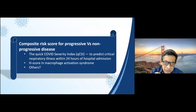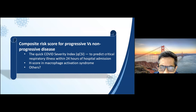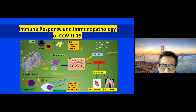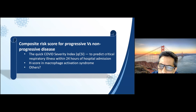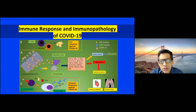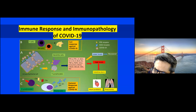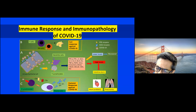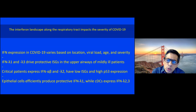It is important to predict who will deteriorate within 24 hours of hospital admission. There is an HScore for macrophage activation syndrome and the qCSI — quick COVID severity index. The immune response and immunopathology of T cells, B cells, humoral response, and cell-mediated response varies — some may have lower levels and recovery while some may have high cytokine storm leading to cardiorespiratory complication and death.